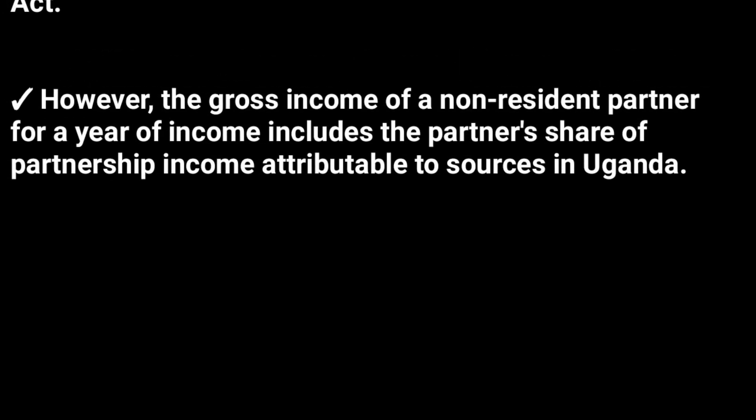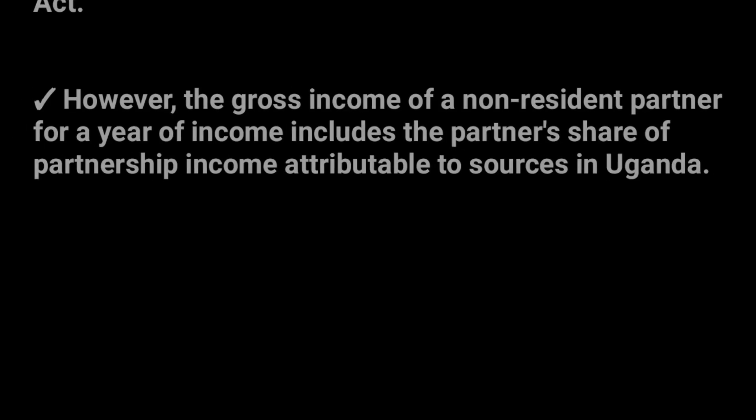However, the gross income of a non-resident partner for a year of income includes the partner's share of partnership income attributed to only the sources in Uganda. They are taxed on only the income derived from Uganda and not from anywhere else. That is the brief introduction about partnership taxation — we shall be having an example in the next video.